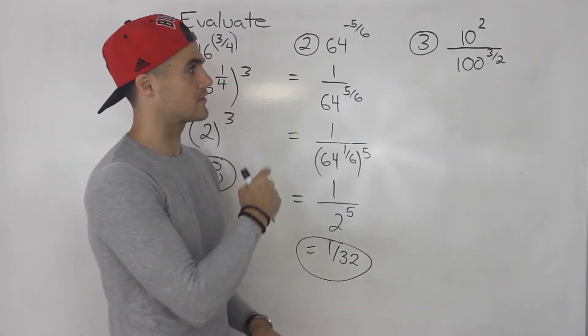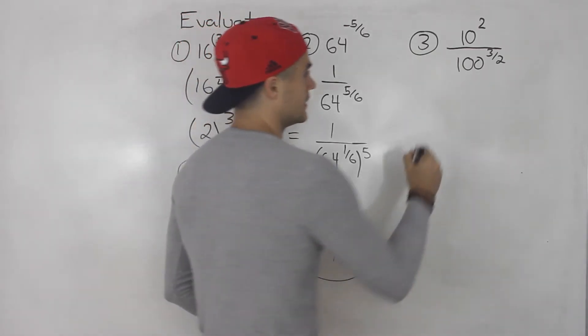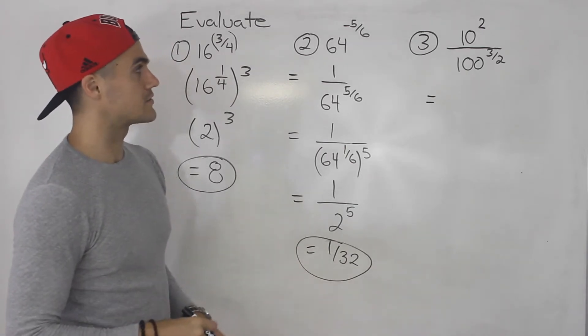And then moving on to number 3, we got 10 to the power of 2 over 100 to the power of 3 over 2. So let's just evaluate the numerator and the denominator separately.